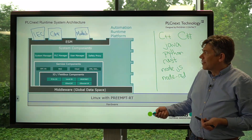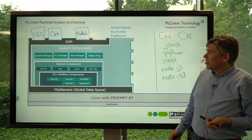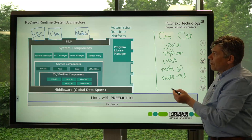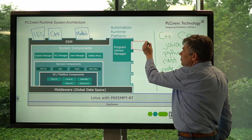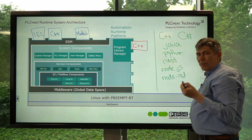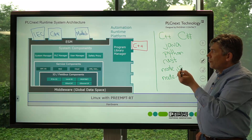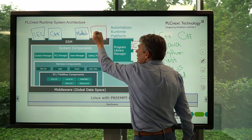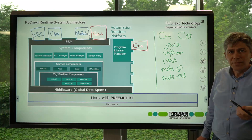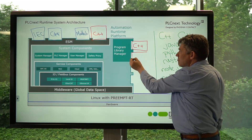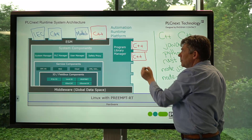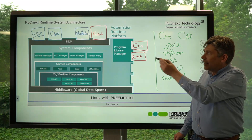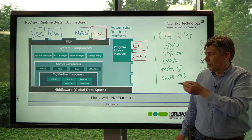We can further extend the function of a PLCnext control using another component called the Program Library Manager, or PLM. Using the PLM, we can write non-real-time C++ components using Eclipse with the PLCnext add-in. These non-real-time PLM components can then provide deterministic real-time C++ programs that run on the ESM. We can add as many non-real-time PLM components as we like, providing as many deterministic real-time C++ programs as needed.